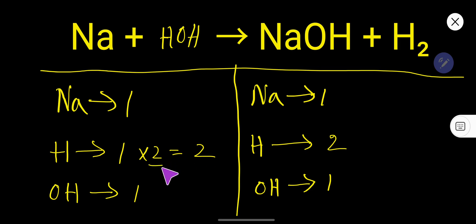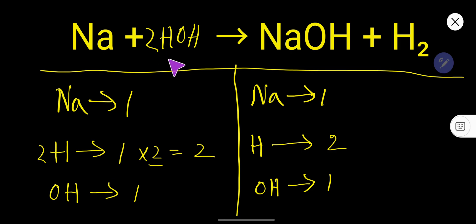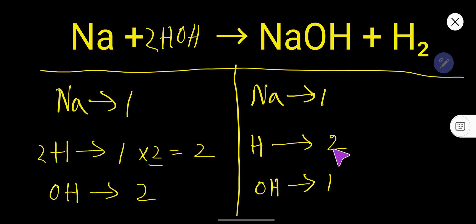If you multiply by something, that something must come before that atom. So place 2 before this atom — it has come from H₂O, so place 2 there. If you place 2 here, the number of hydrogen becomes 2 and the number of hydroxide becomes 2. Now sodium is balanced and hydrogen is balanced, but hydroxide is not balanced.